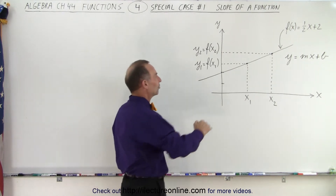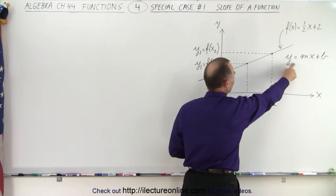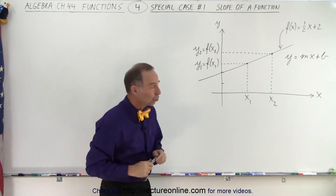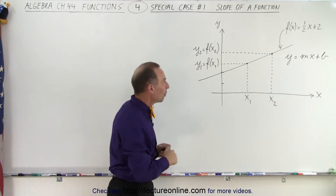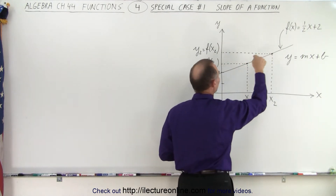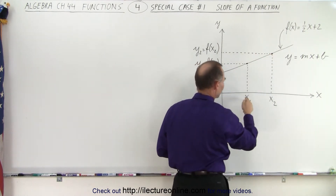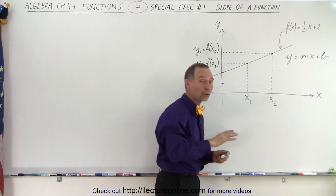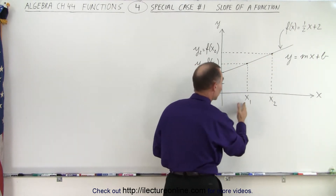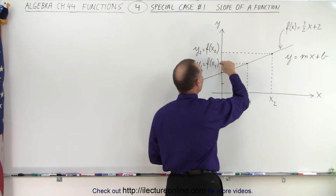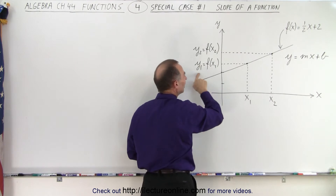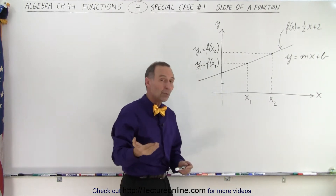We have the straight line defined by y equals mx plus b, or f(x) equals one half x plus 2. We pick any two arbitrary points on the curve — we call the first one x₁ and the second one x₂. Those are the x-coordinates of the two points, and then we have the corresponding y-values y₁ and y₂.